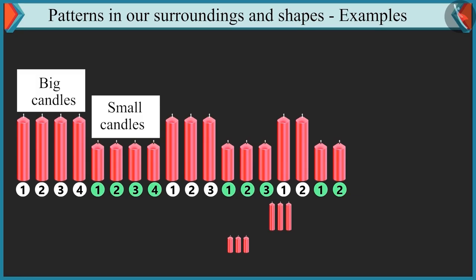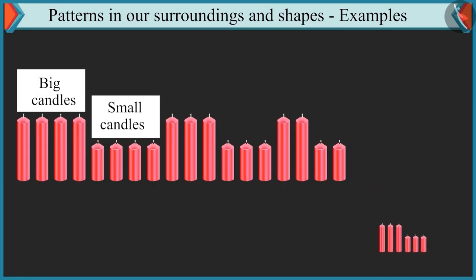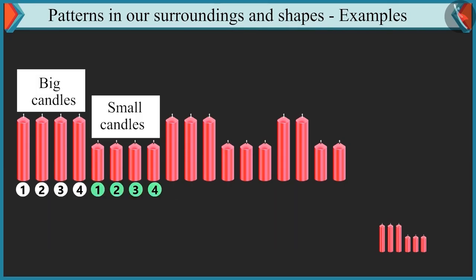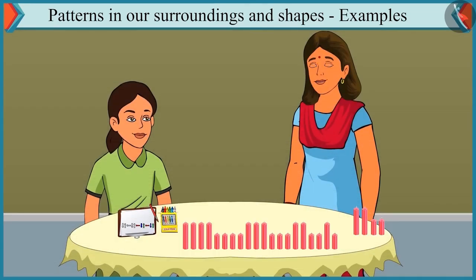It is easy. We have to place three big candles and three small candles. No, Chutki, look carefully. Each time the number of candles is decreased by one. Initially we had four-four candles, after that three-three candles, and then two-two candles. So this pattern will be complete if we place one big candle and one small candle beside it. Well done, Chutki.